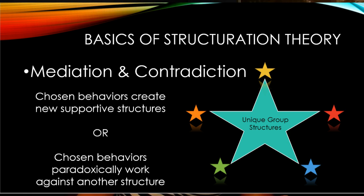Mediation and contradiction are two things that can happen inside any group. As people are choosing to behave, what is accepted and standardized inside that group could either support the structures that are already there, or work against a structure that exists. A final key of Giddens' theory is that all choices — whether made from discursive, practical, or unconscious knowledgeability — have unintended consequences.